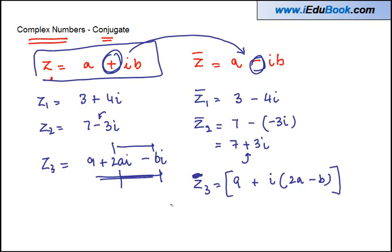The conjugate of Z3 will be given by 9 minus (2A minus B)i, or you can also write this as 9 plus B minus 2Ai.